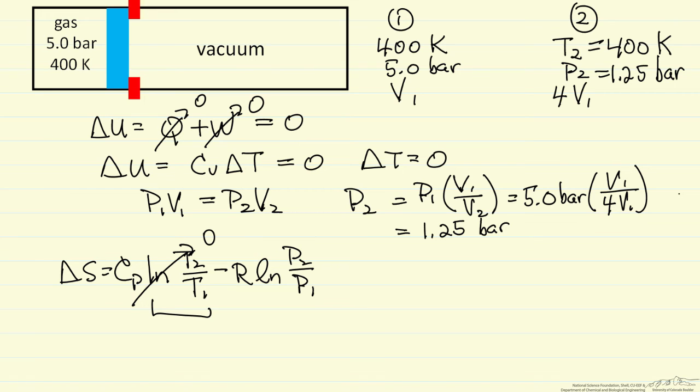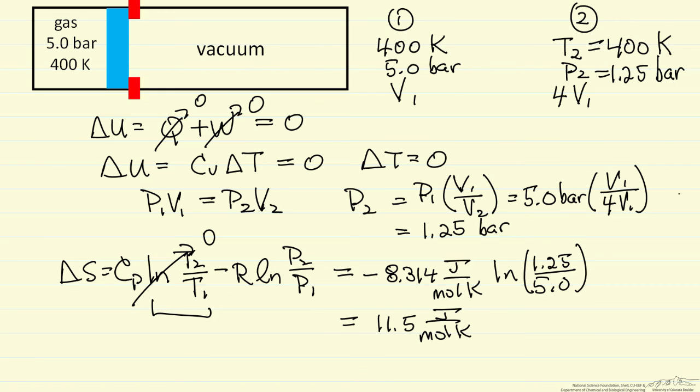So R, we will use in joules, 8.314 joules per mole Kelvin. We are doing a calculation per mole, we do not know the actual number of moles. And then 1.25 over 5.0. If I calculate this out, it is 11.5 joules per mole Kelvin. For significant figures, let's call that 12 joules per mole Kelvin.